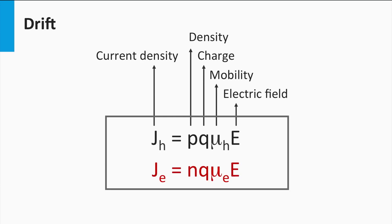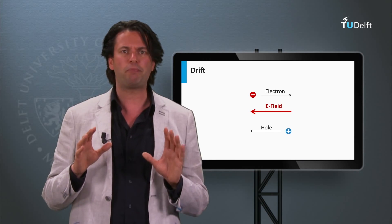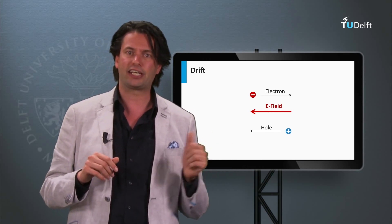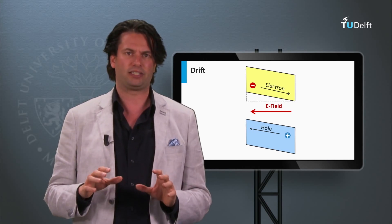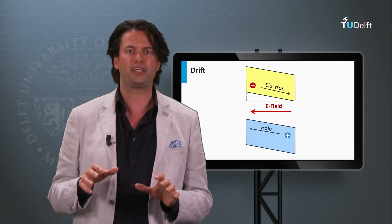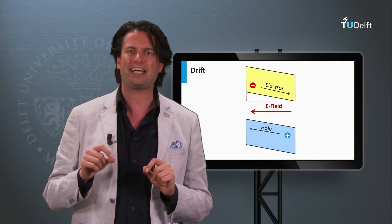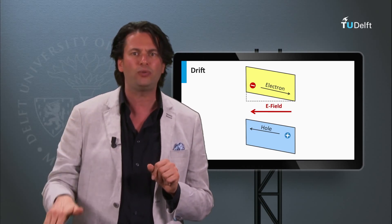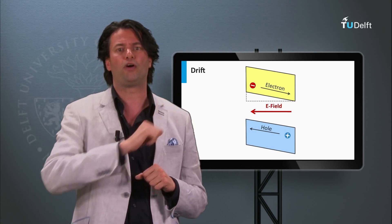Similarly, the hole current density induced by an electric field is given by the product of density of holes P, the electron charge Q, the mobility constant μ, and the electric field E. The presence of an electric field can also be represented in an electronic band diagram. For an electric field pointing to the left, the field induces a slope over the valence band and conduction band — the slope of the electronic band is positive in the direction of the electric field. Excited electrons in the conduction band will on average always move down the slope of the conduction band, while holes will on average always move up the slope of the valence band.